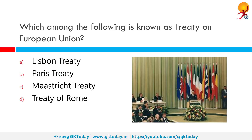Which among the following is known as the Constitution of the European Union? The correct answer is the Maastricht Treaty. The Maastricht Treaty, officially the Treaty on European Union, was signed on 7 February 1992 by the members of the European Community in Maastricht, to further European integration. On 9 to 10 December 1991, the same city hosted the European Council which drafted this treaty.